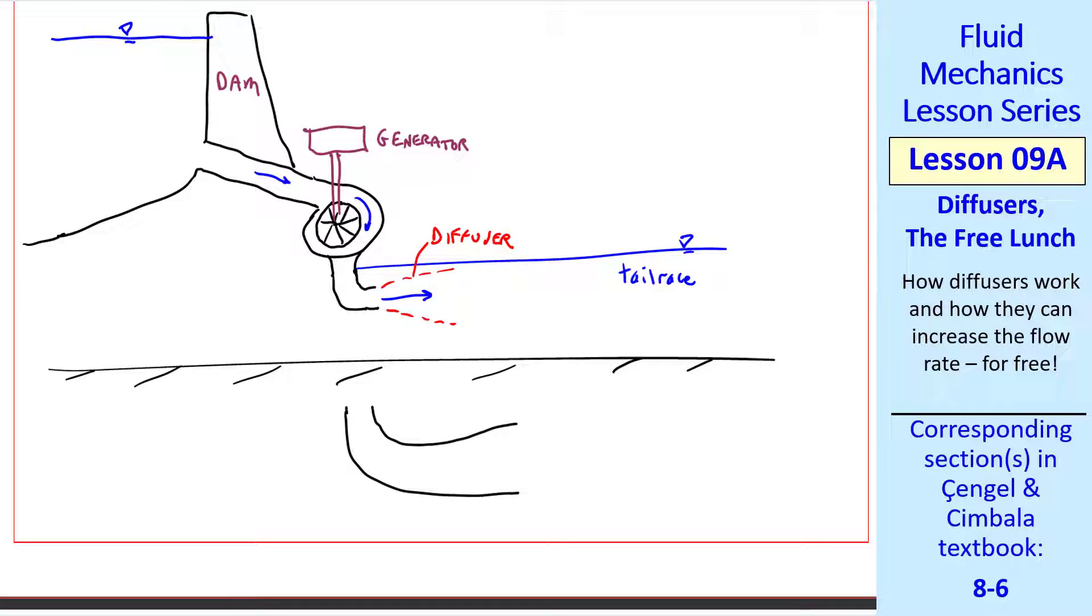In an actual dam the diffuser is integrated into the elbow. So it's all one unit called a draft tube. For the same location, one, the draft tube which functions as a diffuser, lowers the pressure here compared to here.